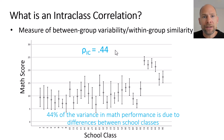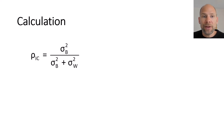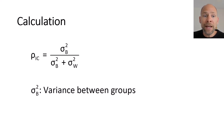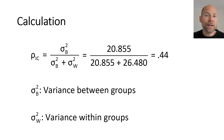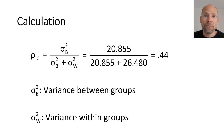Now let's figure out how we get this value of 0.44. The formula for the ICC has the between-groups variance (σ² between groups) in the numerator, and in the denominator you have the sum of the between-groups variance component and the within-groups variance component. In our example, the between-groups variance estimate is 20.855 and the within-groups variance component is 26.48, and when we plug those into the equation we get 0.44.